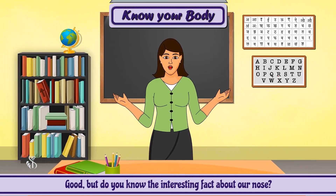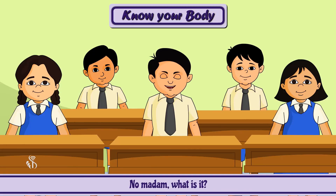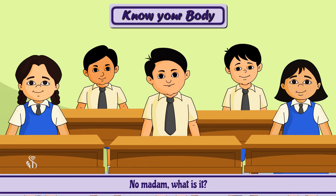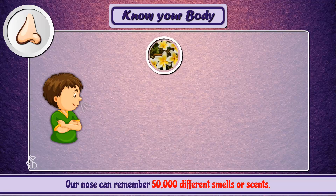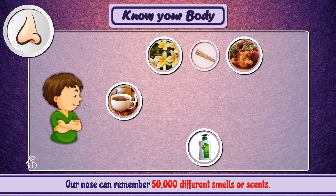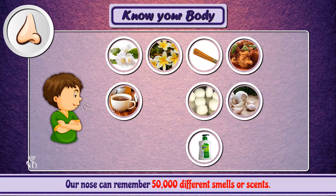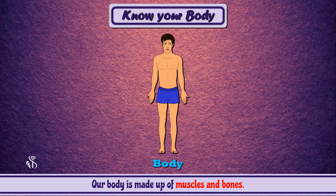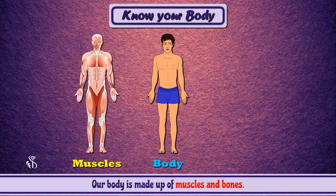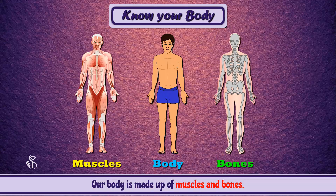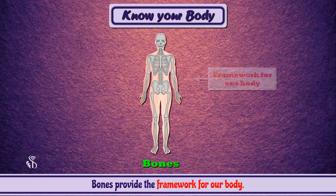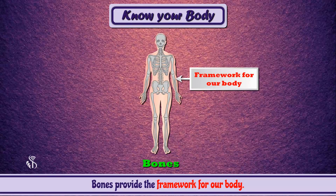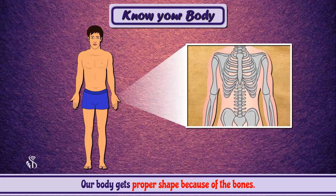Do you know an interesting fact about our nose? Our nose can remember fifty thousand different smells. Our body is made up of muscles and bones. Bones provide the framework for our body, and our body gets its proper shape because of the bones.